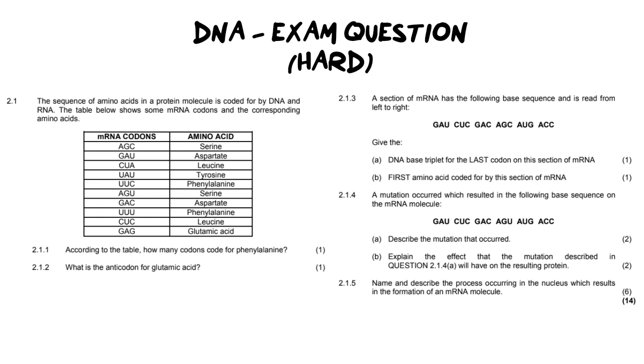Now this question is a little bit more challenging than the first one I have posted and you'll see why as we make our way through the questions. It says the sequence of the amino acids in a protein molecule is coded for by DNA and RNA and the table below shows mRNA codons and their corresponding amino acids.